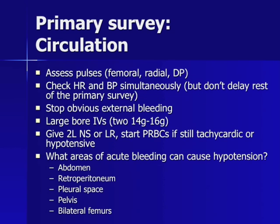After the breathing assessment, circulation should be evaluated. Pulses should be assessed, including in the femoral, radial regions, as well as the dorsalis pedis and posterior tibialis pulses. Heart rate and blood pressure may be checked simultaneously, but vital signs should not delay the rest of the primary survey. Direct pressure should be held on any obvious external sites of bleeding. Two large-bore IVs, which are 14 to 16 gauge, should be placed, ideally in the antecubital fossae.